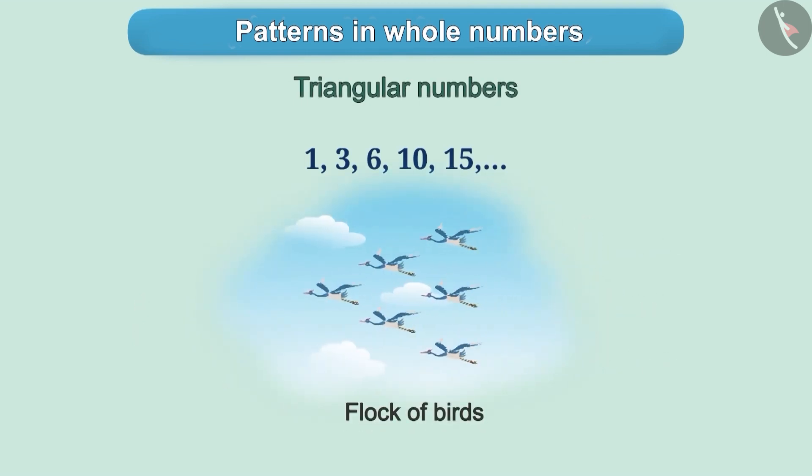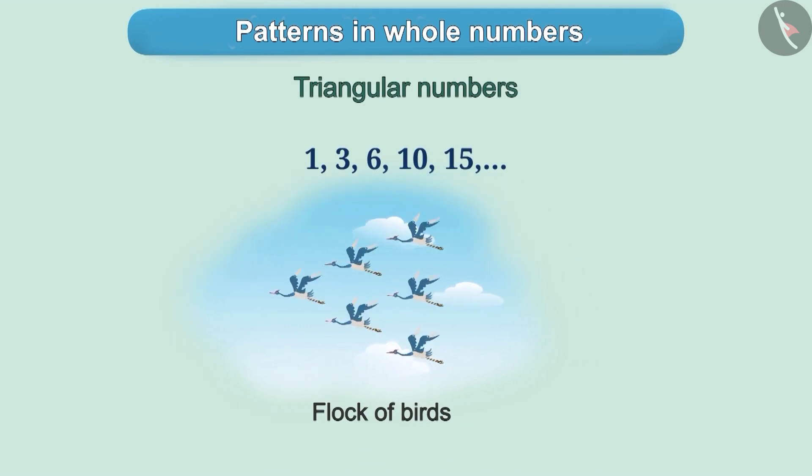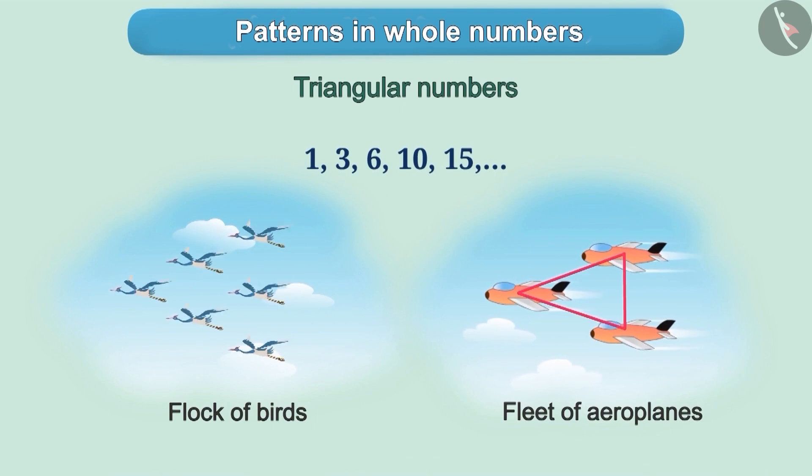A flock of birds sometimes take the shape of a triangle. Similarly, a fleet of aeroplanes also take the shape of a triangle. These numbers also are called triangular numbers.